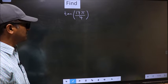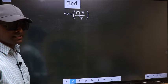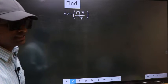Find tan 17 pi by 4. To find this, we should follow this method, C.